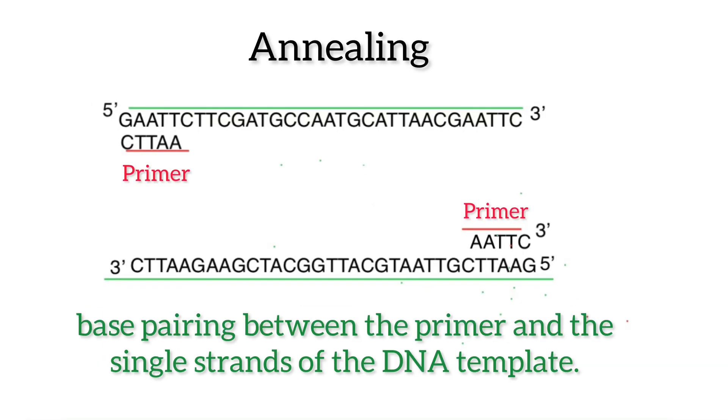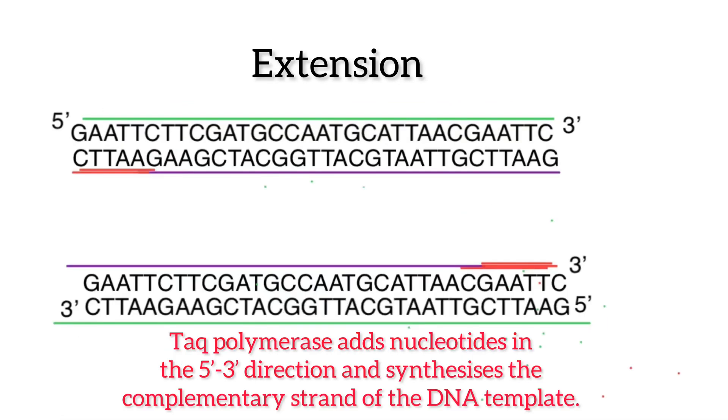The second step is annealing. The sample mixture is then cooled to between 50 to 60 degrees Celsius, allowing the DNA primers and the DNA polymerase enzymes to bind to the individual strands of DNA that were separated by the heat. The third step is extension. Once joined together, they form a new complementary strand of DNA. Thus, a new duplicate double-stranded DNA molecule has been formed from each of the single strands of the original sample molecule.